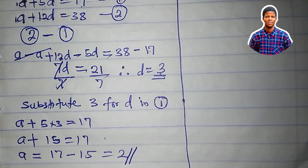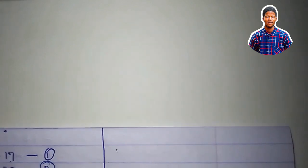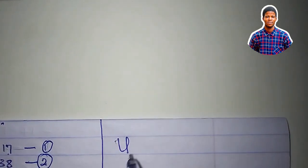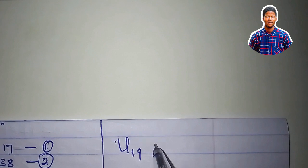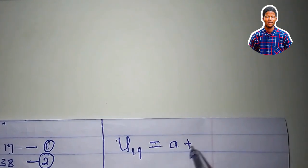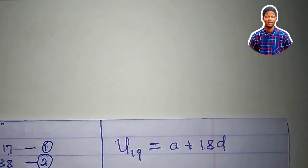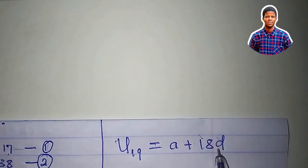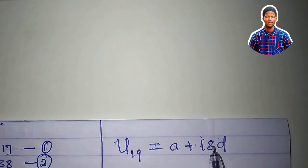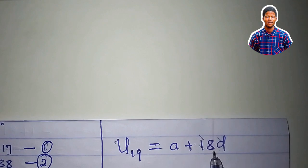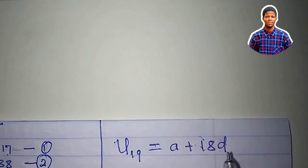Now what is the 19th term? That is what the question says. So from the nth term formula, we can say that U sub 19, which is the 19th term, is equal to A plus 18d. Because in place of that n minus 1, n is 19. 19 minus 1 will give us 18. And 18 times d is 18d.